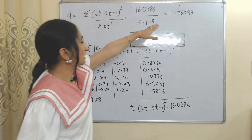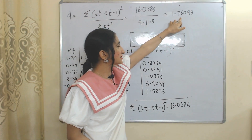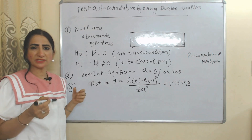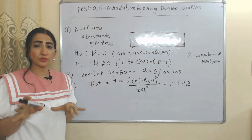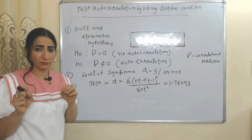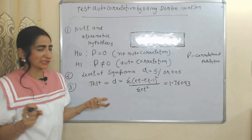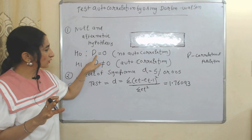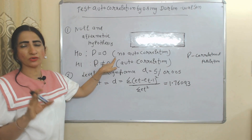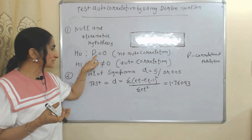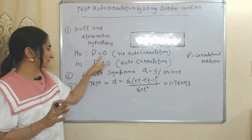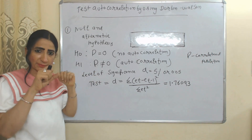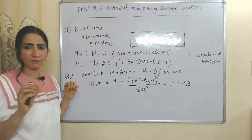We put these two values into the formula and our answer is d = 1.76093. Now we test for autocorrelation using the Durbin-Watson formula. As we know, whenever we test any hypothesis, we first make null and alternative hypotheses. H₀ is the null hypothesis: rho equals zero, meaning there is no autocorrelation. The alternative hypothesis is: rho is not equal to zero, meaning autocorrelation is present.